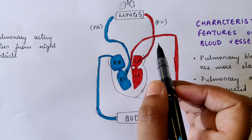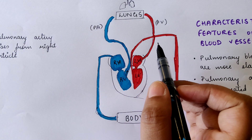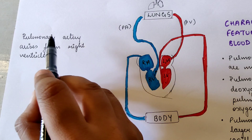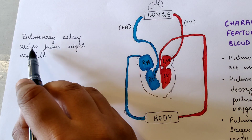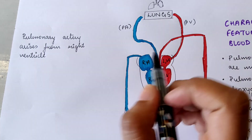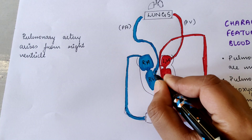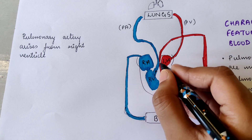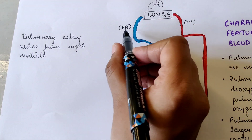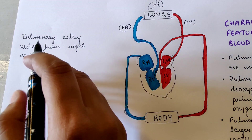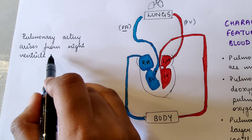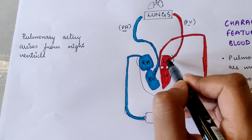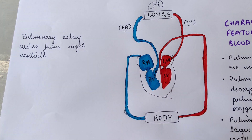Our main area of study will be the lung part. The pulmonary artery arises from the right ventricle — this is the right ventricle, and this vessel is nothing but the pulmonary artery. It arises from the right ventricle, and the pulmonary vein drains into the left atrium.